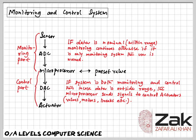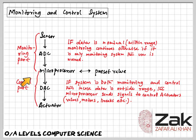Examples of control systems include turning street lights on at night and off again during daylight, controlling the temperature in a central heating or air conditioning system, controlling the traffic lights at a road junction, operating anti-lock brakes on a car when necessary, and controlling the environment in a greenhouse.